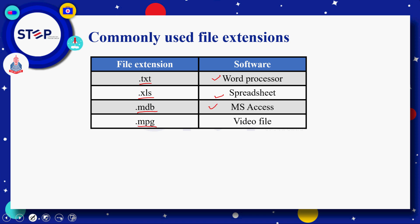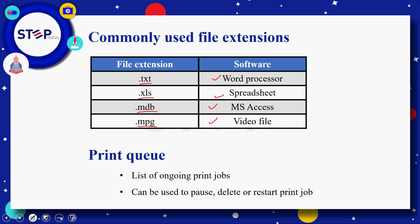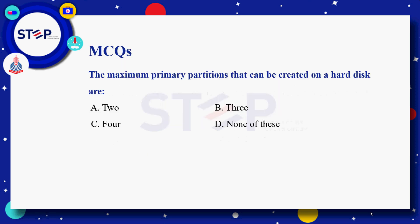Print queue — آپ کے computer میں ongoing prints کی جو list ہوتی ہے اس کو ہم print queue بولتے ہیں۔ اس کا main مقصد یہ ہے کہ ہم اس کو اپنے different prints کو pause کرنے، delete کرنے یا restart کرنے کے لئے use کر سکتے ہیں۔